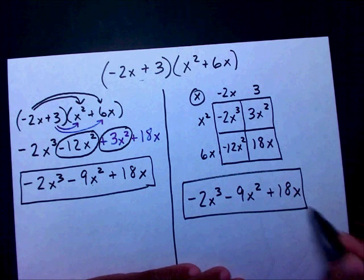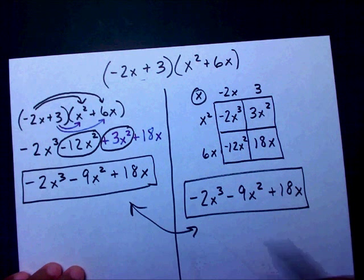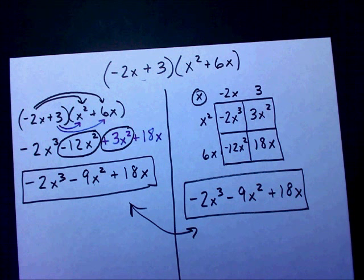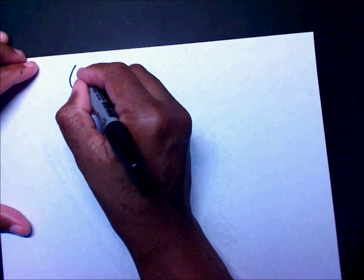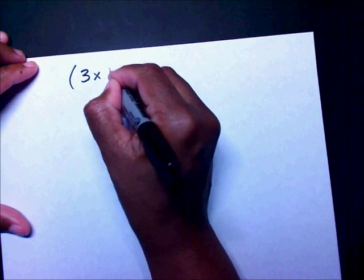Same answer, different processes. Now let's work another one — multiplying a binomial times a trinomial. You'll really start to see why I like the box method once we do this.